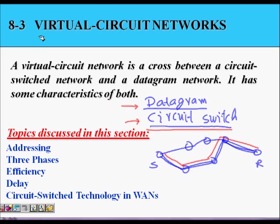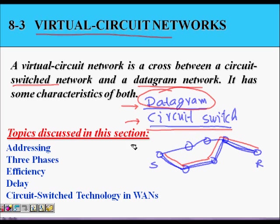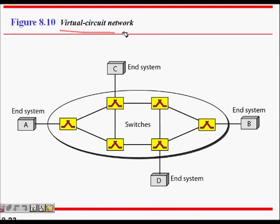Between datagram and circuit switched networks there is something known as a virtual circuit. A virtual circuit network is a cross between a circuit switched network and a datagram network — it has characteristics of both, aiming to get the best of both. It is based on the datagram network, so packets flow from source to destination, but unlike the datagram network they follow the same path. There are three phases: call setup phase, data transfer phase, and teardown phase.